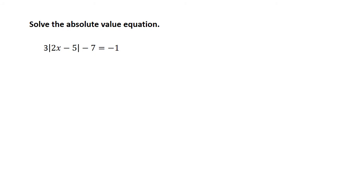Let's go to a slightly more complicated equation. You might get nervous when you first see this equation because you see the negative one on the right side. But remember, if you look at the equation fully, this is not just the absolute value equal to negative one. We actually have three times the absolute value of 2x minus 5, minus 7, equals negative 1.